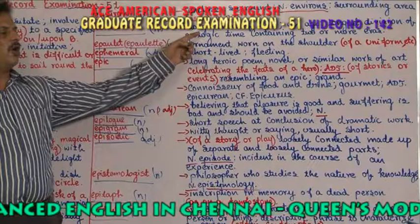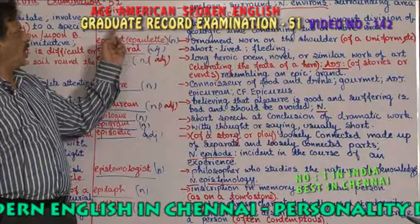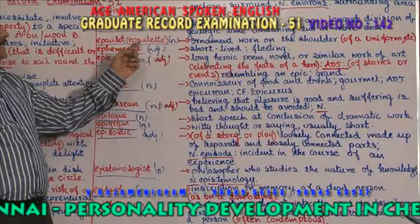Eon — a long period of time. A long period of time is called eon, an age. The longest division of geological time, containing two or more eras — so a very long time period is called eon.